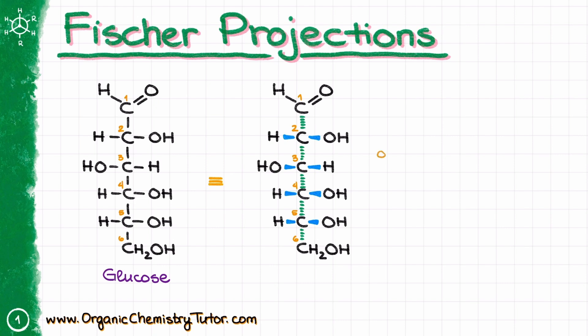So in other words, if I'm standing next to my structure and looking at it from this perspective, what I'm going to see is a chain of carbons that kind of looks like a C shape. So I'm going to have carbon number one, two, three, four, five, and six. If I number them, they're going to be one, two, three, four, five, and six, just like what I have in my middle representation.